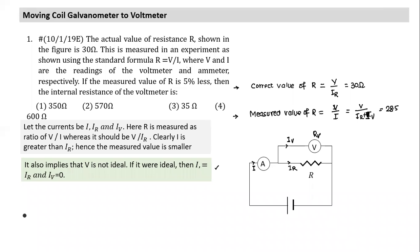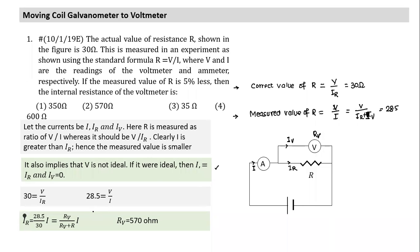Can we find Rv? Using the current divider: IR = [Rv/(R + Rv)] × I. This ratio equals 28.5/30 (since measured R/actual R = 0.95). With R = 30 ohms: Rv/(30 + Rv) = 28.5/30. Solving: 30 × Rv = 28.5 × (30 + Rv), giving Rv = 570 ohms. That's the solution.